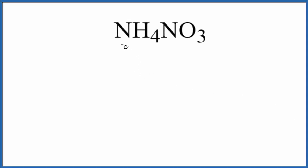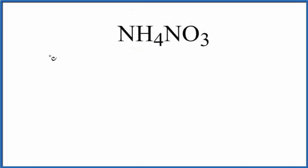In this video, we'll figure out the number of atoms in NH4NO3. This is ammonium nitrate. Let's first write down each element. We have nitrogen, hydrogen, and oxygen.